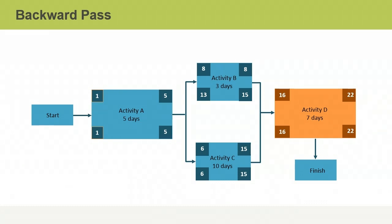As you work backward through the schedule network diagram, the late finish date for Activities B and C will fall on the date preceding the late start date of Activity D. So the late finish dates for Activities B and C are May 15th. To calculate the late start date for Activity B, you subtract the activity duration of 3 days from the late finish date of May 15th and then add one day, giving you a late start of May 13th. Using the same process for Activity C, you get a late start date of May 6th. When activities occur in parallel, the smaller of the late start values is used to calculate the late finish date for the preceding activity. Activity C has the earlier late start value of May 6th, so the late finish date for Activity A will be May 5th, giving a late start of May 1st.